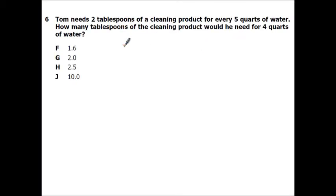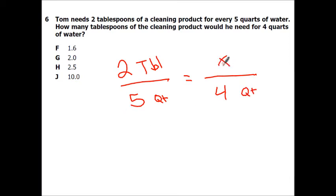Number 6. Tom needs 2 tablespoons of cleaning product for every 5 quarts of water. How many tablespoons of cleaning product would he need for 4 quarts of water? For this, we're just going to set up a proportion. We know that we need 2 tablespoons for every 5 quarts, and that's going to equal whatever my other proportion is. Since they said 4 quarts down here, and we put quarts on the bottom, we need to make sure we keep it on the bottom. And this is going to be my x. So now I'll cross multiply. 5 times x is 5x, and 2 times 4 is 8. Divide both sides by 5. So x equals 8 fifths, which we can simplify to 1 and 3 fifths, which is 1.6.